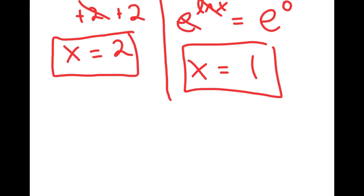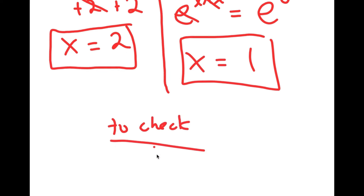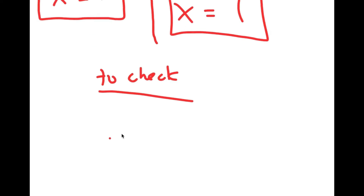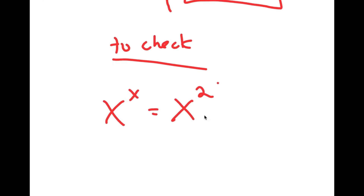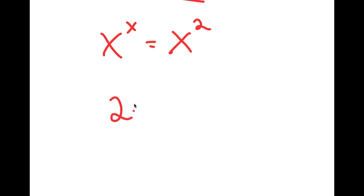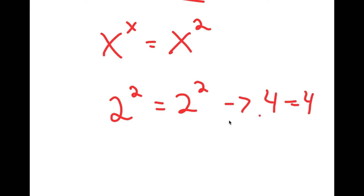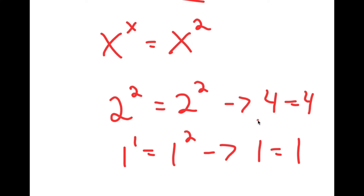Now to check — my equation is x to the power of x is equal to x to the power of 2. If I plug in 2, I get 2 to the power of 2 is equal to 2 to the power of 2, meaning 4 is equal to 4. If I plug in 1, I get 1 to the power of 1 is equal to 1 to the power of 2, meaning 1 is equal to 1. So both of them are correct.